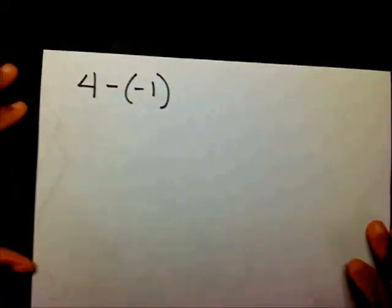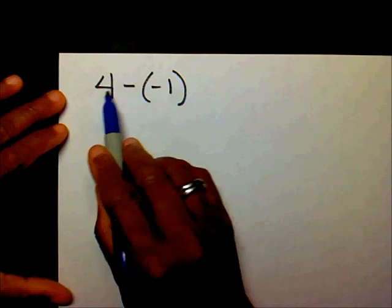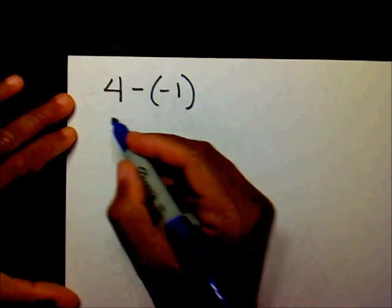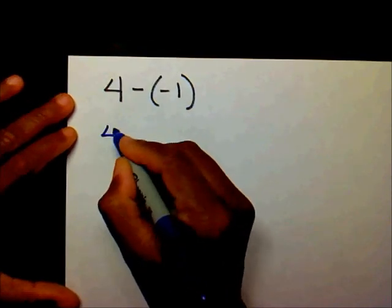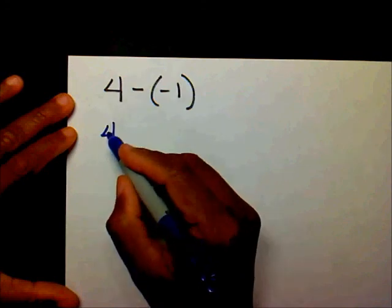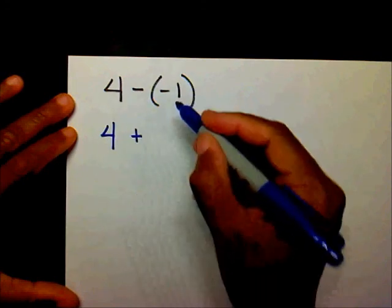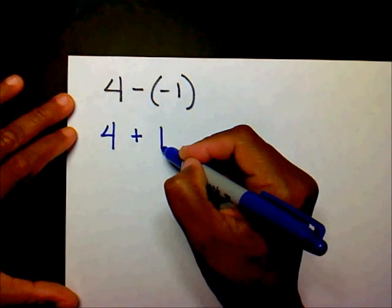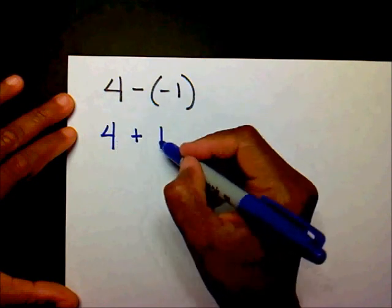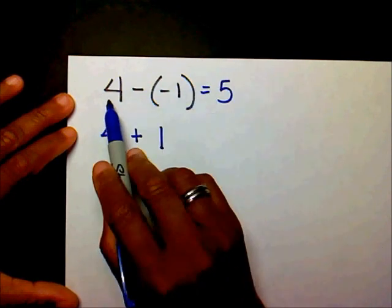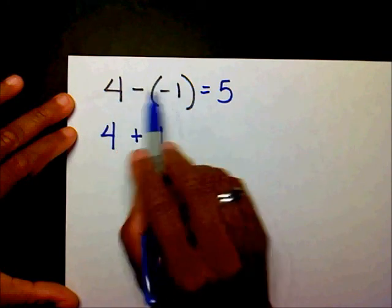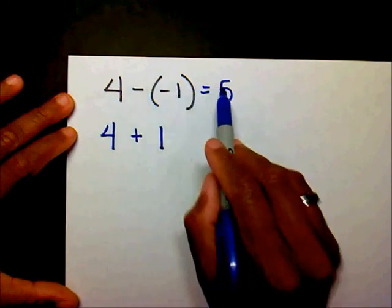The next problem we have is 4 minus negative 1. So I have my 4. I want to add the opposite of negative 1 is positive 1. So therefore, 4 plus 1 is 5. So 4 minus negative 1 is 5.